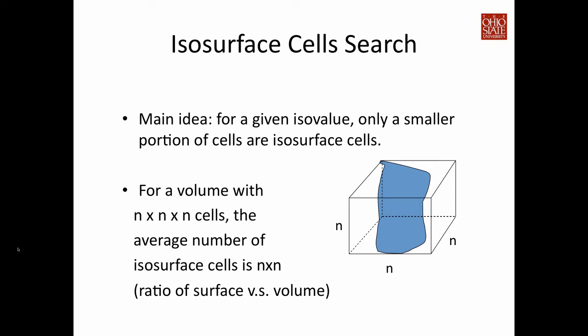More precisely, for a volume that has n by n by n cells, it is a three-dimensional entity. Because the surface is a two-dimensional object, the average number of isosurface cells — that is, the number of voxels intersected by the isosurface — is going to be n squared. So this is the ratio between surface versus volume.